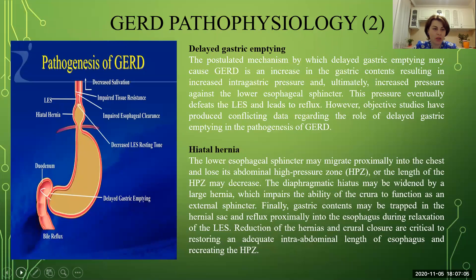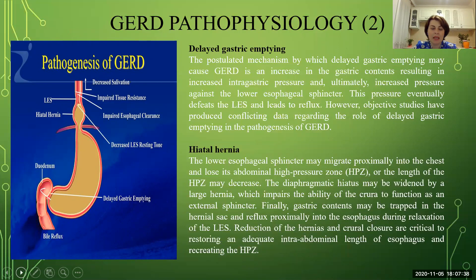In the pathogenesis of GERD, protective factors cannot adequately protect the esophageal surface from damage. Contributing factors include impaired tissue resistance, impaired esophageal clearance, changes in pressure, delayed gastric emptying, and the presence of hiatal hernia as a factor decreasing functionality of the lower esophageal sphincter. Delayed gastric emptying may cause GERD by increasing gastric contents, resulting in increased intragastric pressure, which ultimately increases pressure against the lower esophageal sphincter and leads to reflux.